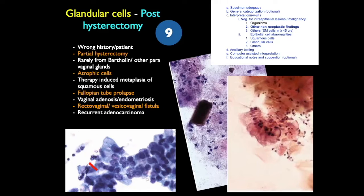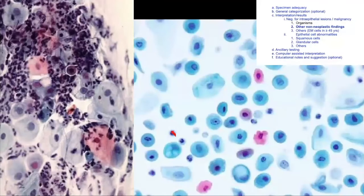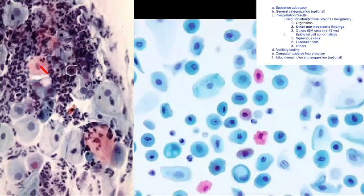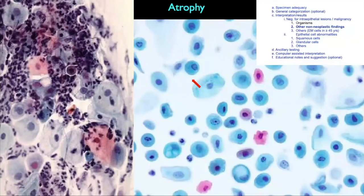Here you see metaplastic cells that are pink and parabasal cells that are predominant. In addition, they show pseudo-orangeophilia and perinuclear halo along with inflammatory cells — this is atrophic vaginitis. Another image shows only atrophy without inflammation.